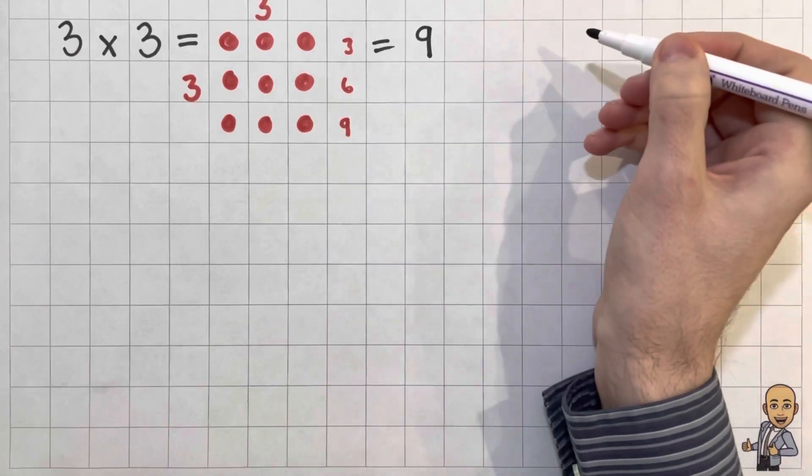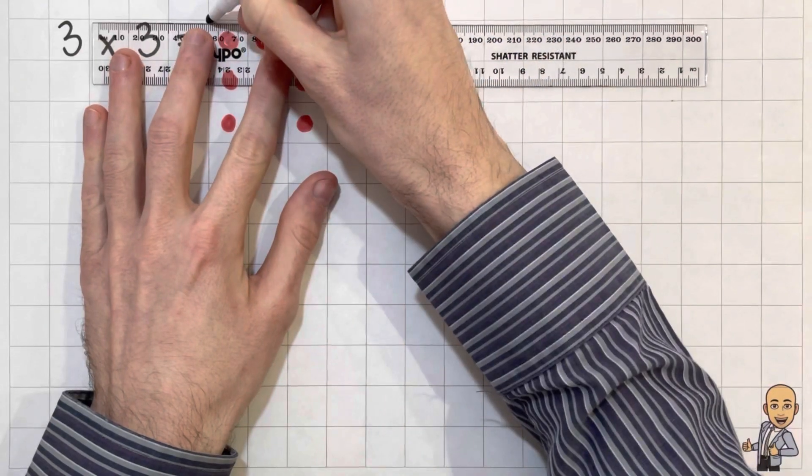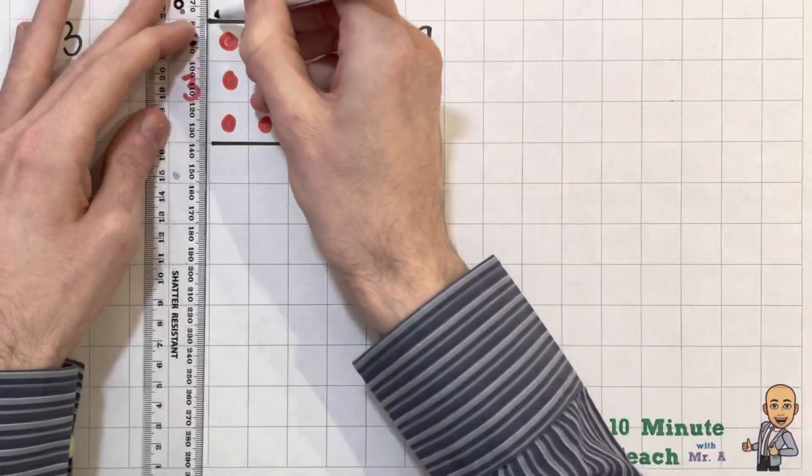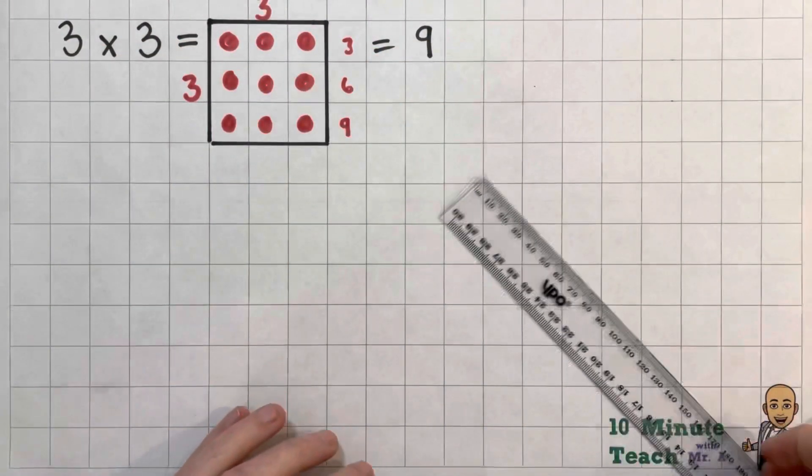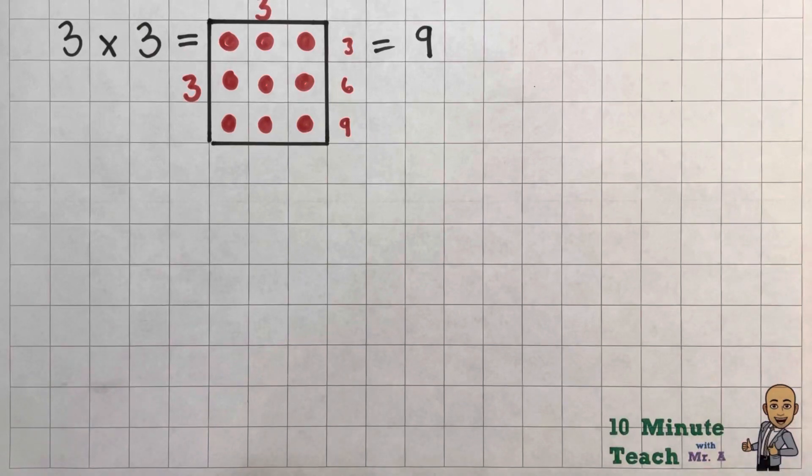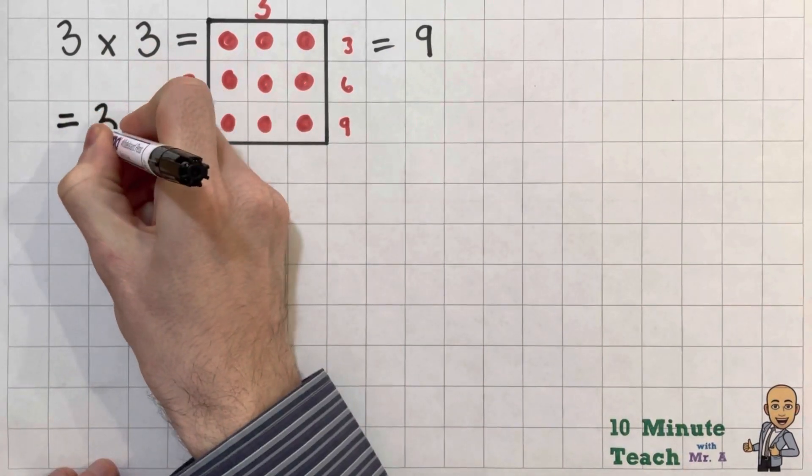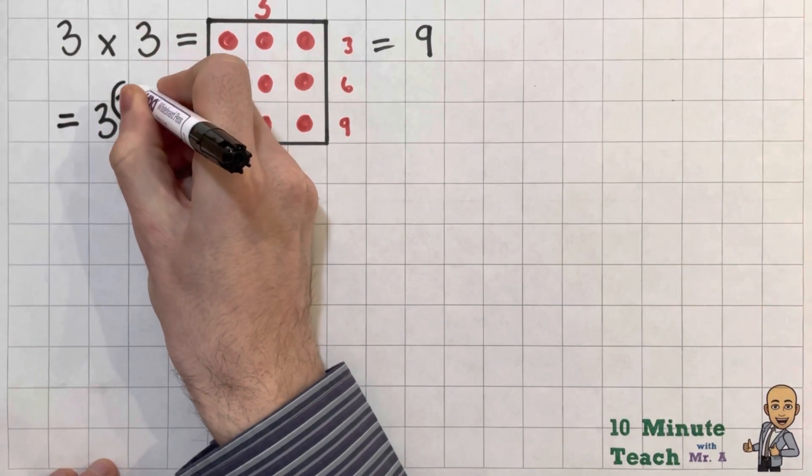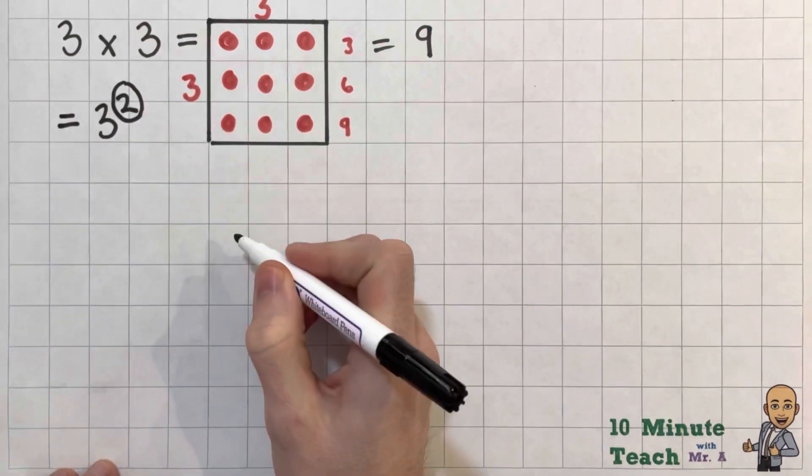Now we call that a square number and it's really easy to see why it's called a square number because actually if you draw it out in your array, it makes a perfect square. So they're called square numbers and it's simply when you times a number by itself. So we could actually say that 3 times 3 is 3 squared. And this little symbol here is what you put to indicate that it's timesed by itself.